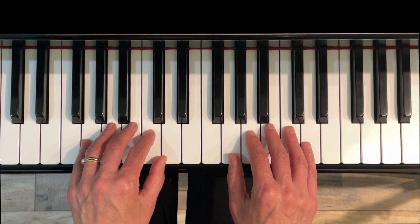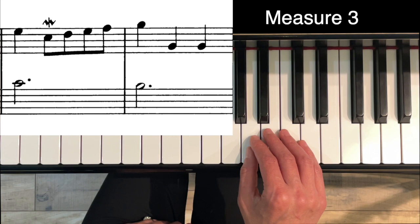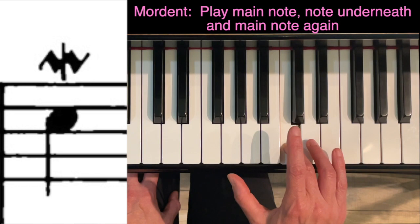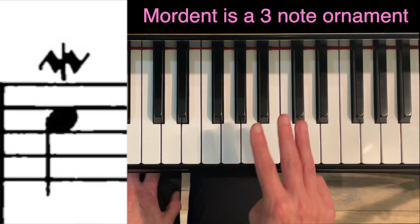We're going to go through chronologically in the music, so we're going to start with measure three. In measure three, there's an ornament that looks like a little squiggle with a line through it. This ornament is called a mordent, and what it means is to play the main note, then the note underneath, and then back to the main note—so it's a three-note ornament.